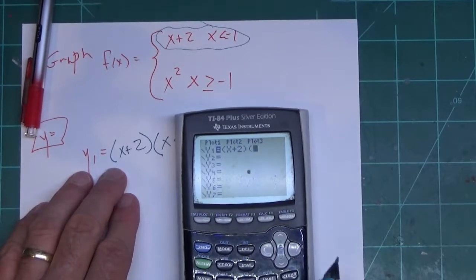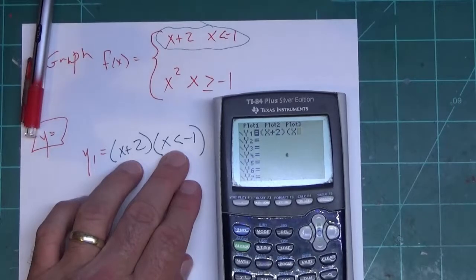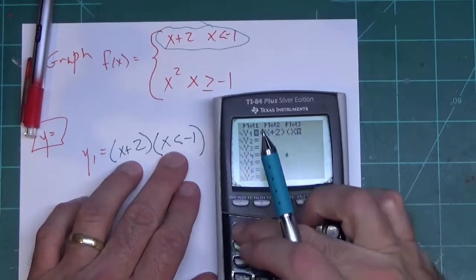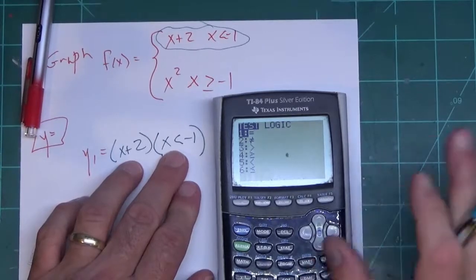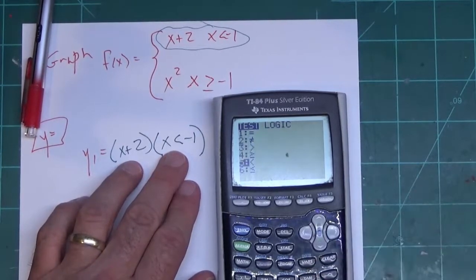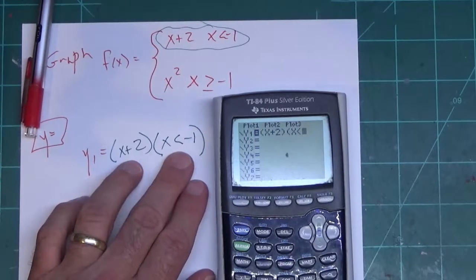X. Now where do you get the inequality? Well, that inequality is the second math button. If I hit second math, I get all of the inequalities. I want less than, so I'm going to go down to less than and put negative 1 there.